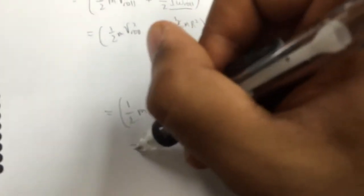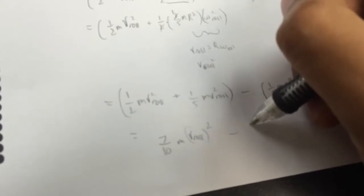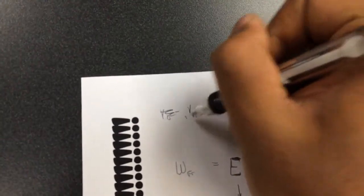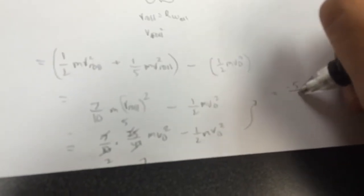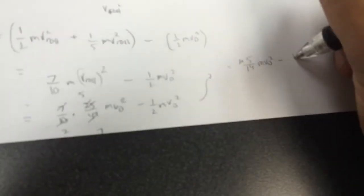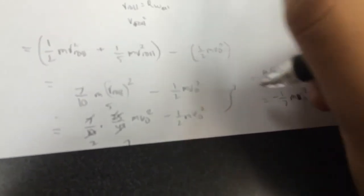So now we have to use the value we found in the previous problem that v_roll is 5/7 v_0. So if we substitute that into here, we're gonna get 7/10 times 25/49 mv_0² minus 1/2 mv_0². So we can cancel, and we are left with 5/14 mv_0² minus 1/2 mv_0², which is negative 1/7 mv_0². And that's the work done by friction.